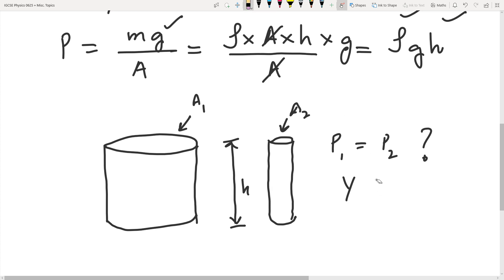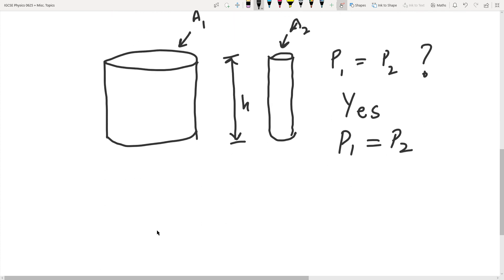P1 will equal P2 because from this equation we know that P is independent of area now. This is what we get in terms of pressure of a liquid in a column. Yes, pressure can be related to gravity, and we can say that pressure is directly proportional to gravity.